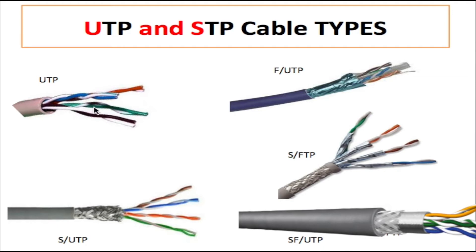The twist within the pair is designed to cancel this electromagnetic field, and this electromagnetic interference is called crosstalk. If we increase the frequency from 100 megahertz to 250 megahertz — beyond what this cable is rated for — the current is going to be higher and the magnetic field developed is going to be much stronger.